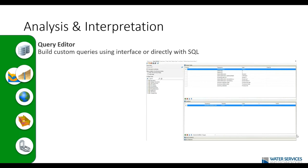Regarding the analysis and interpretation group, the first tool is the Query Editor, where we can build custom queries using the interface or directly with SQL. I like to say this is the heart of Hydrogeo Analyst, because it is where we ask questions to our database and retrieve information from it. For example: in my last water quality campaign, which results were above the legislation limits? Or: in the last month, what was the average efficiency of my pumping wells around my pit? I could ask any question to my database and use those queries to visualize information in maps, reports, and so on.